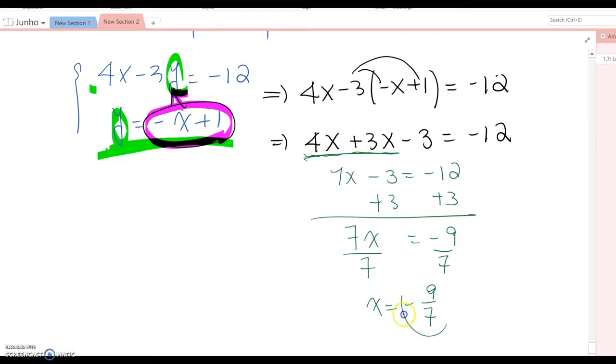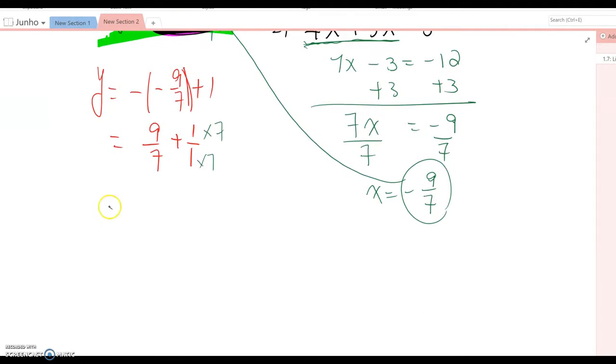Now plug this into this equation because it's already defined as y. Then y equal to negative negative 9 over 7 plus 1, so this becomes 9 over 7 plus 1. One means 1 over 1, and the common denominator is 7, so you multiply 7 here. Then this becomes 9 plus 7 over 7, which is 16 over 7. Therefore the answer becomes negative 9 over 7 comma 16 over 7.